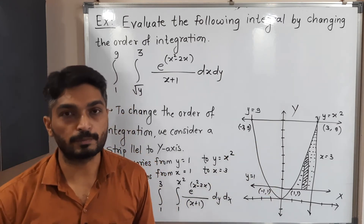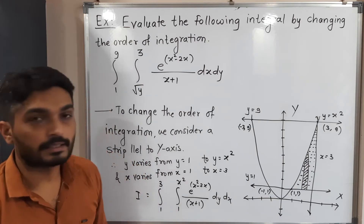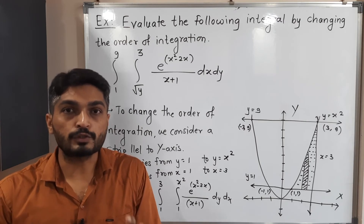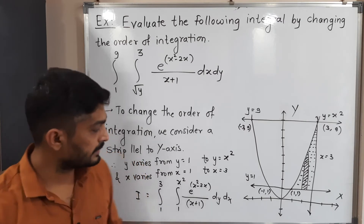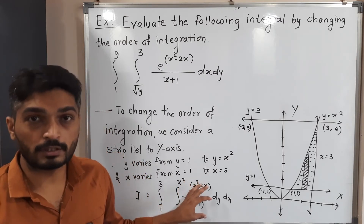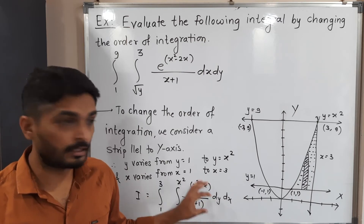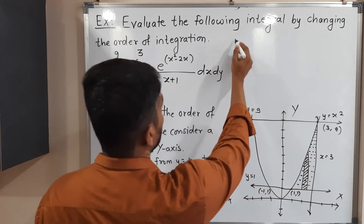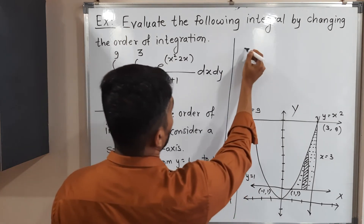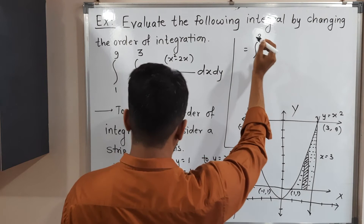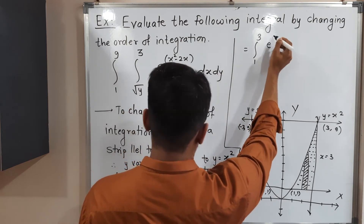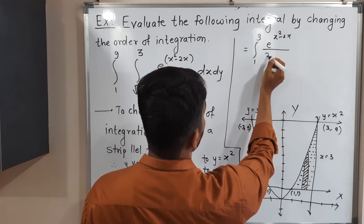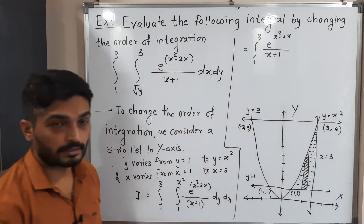So the new integral is I equals integration from one to three, integration from one to x squared, of e raised to (x squared minus 2x) divided by (x plus one), dy dx. When we integrate with respect to y, x and all functions of x are treated as constants. So the entire function e raised to (x squared minus 2x) over (x plus one) can be taken outside the inner integral.